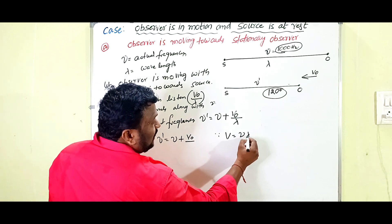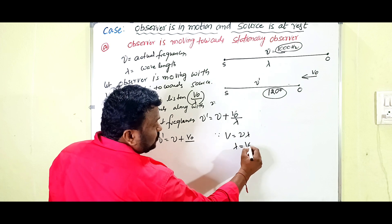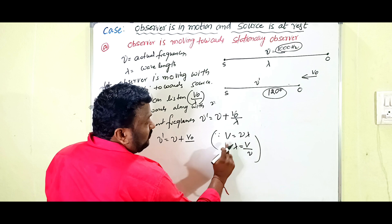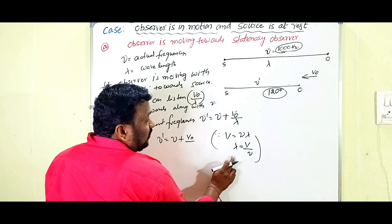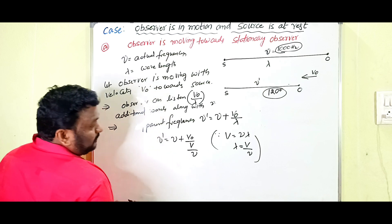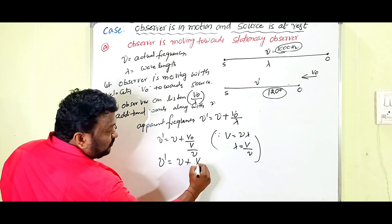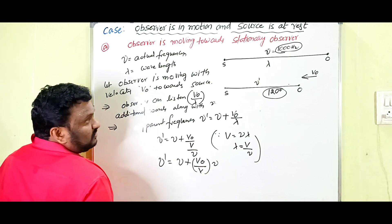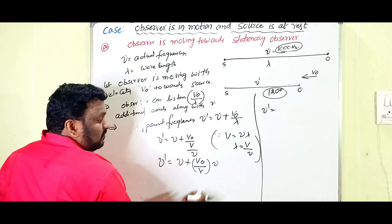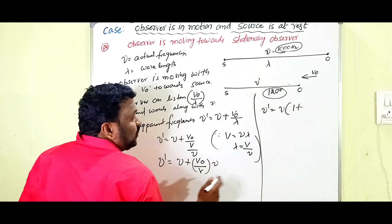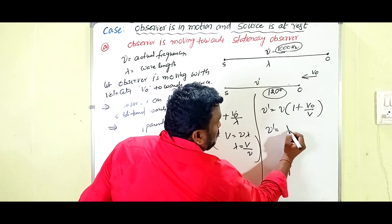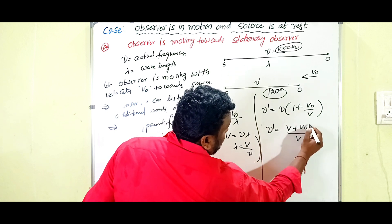We know that v = νλ, so λ = v/ν. Substituting lambda with v/ν, we get: ν' = ν + v₀/(v/ν), which simplifies to ν' = ν(1 + v₀/v). Taking LCM, the expression becomes: ν' = [(v + v₀)/v] × ν.